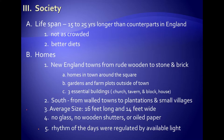In every town, there were three essential buildings: the church, the tavern, and a blockhouse. A town could be fined if they didn't have each of those buildings. We'll talk more about those three buildings in a few minutes. In the south, where the population was much more scattered and sparsely populated, they went from walled towns to large plantations and small villages. The south would never have any large cities until closer to the time of the revolution.